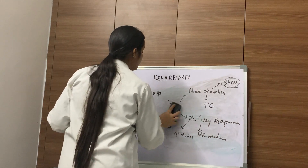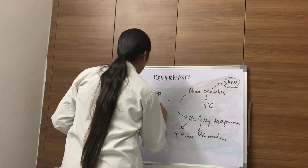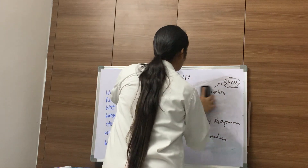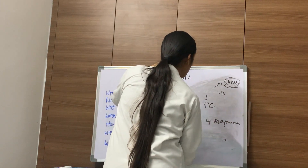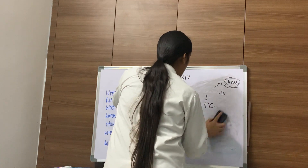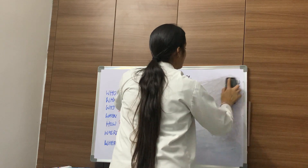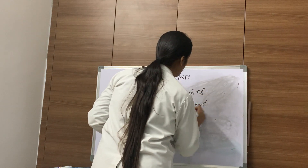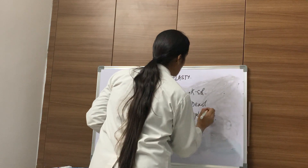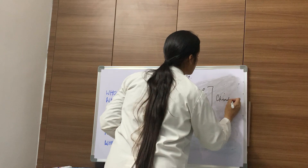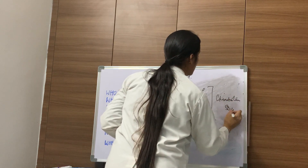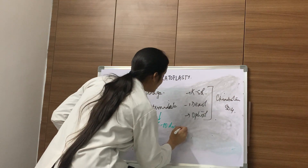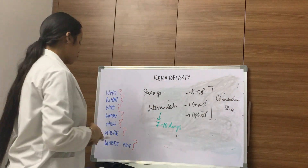For intermediate storage, certain media containing chondroitin sulphate as the main constituent are used. These media include Questol, Dexol, or Optisol. In these chondroitin sulphate-based media, the cornea can remain viable for 7 to 10 days, after which it can be used for transplantation surgery.